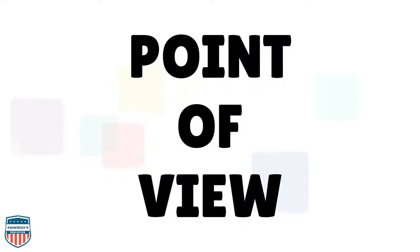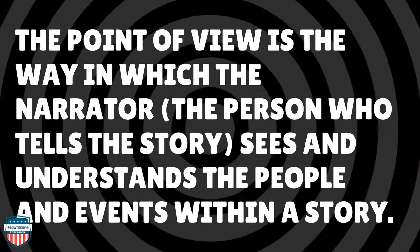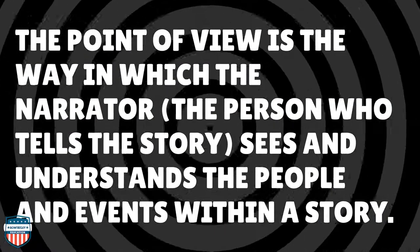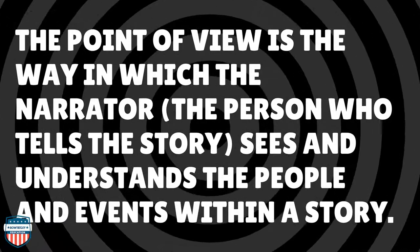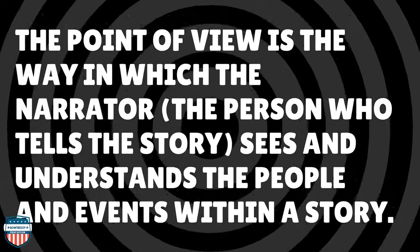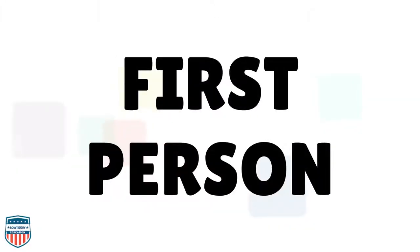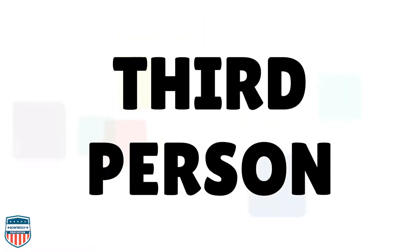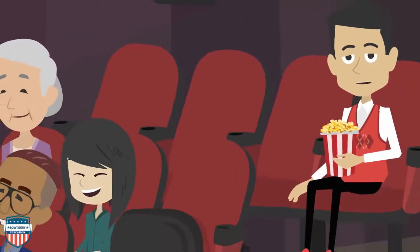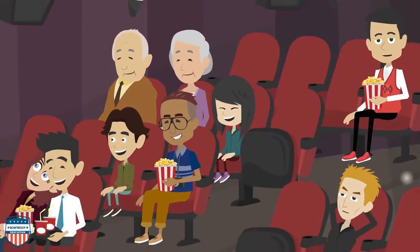And lastly, let's discuss the point of view. The point of view is the way in which the narrator, or the person who tells the story, sees and understands the people and events within the story. A narrator can have one of the following points of view: first person, which is the character in the story that takes part in the action. First person narrators give themselves away by using pronouns such as I, me, or my. Third person — a third person narrator is not even a character within the story. These narrators use words like he and she to tell the story.